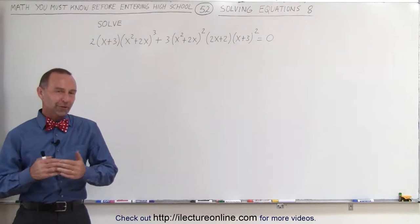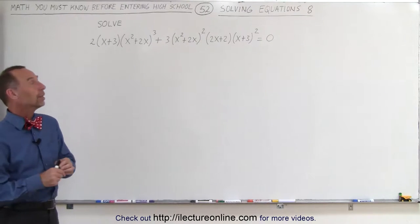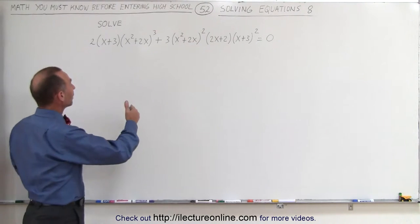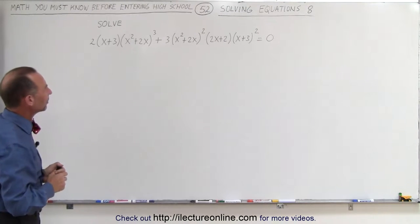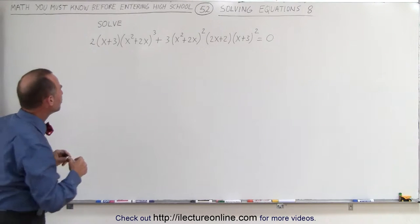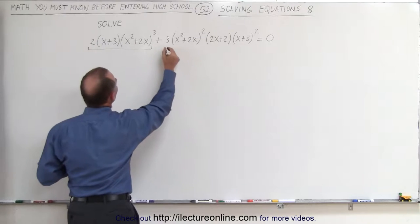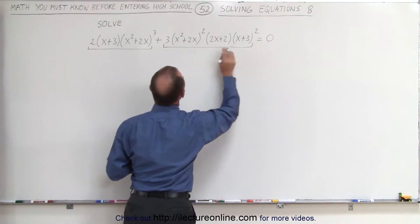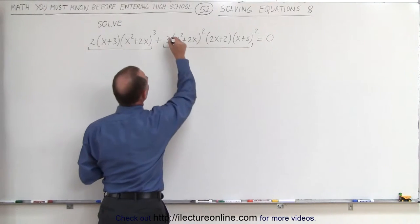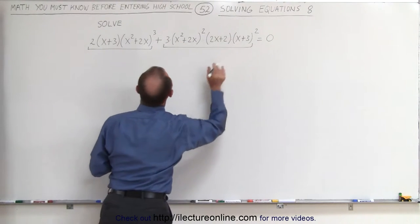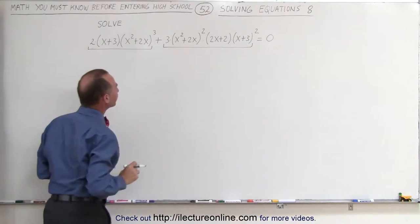Welcome to ElectronLine. Now let's go for something a little bit different. We're still trying to solve this equation, meaning we're trying to find the value or values for x that will make the left side equal to the right side. Looks kind of complicated, doesn't it? But if you look carefully, notice there's a plus sign here which separates this portion on the left side from that portion on the left side.